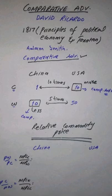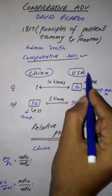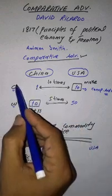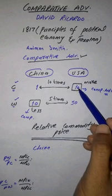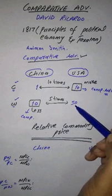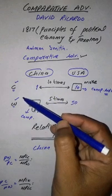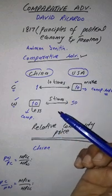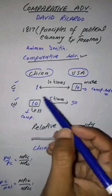To elaborate this with a numerical example, we have two countries: China and the United States of America. Looking at the table, China is less efficient in the production of both computer programs and wheat, while the USA is more efficient in the production of both. So USA has absolute advantage in both commodities and China has absolute disadvantage. According to Adam Smith, trade between them is not possible, whereas David Ricardo says trade between them is not only possible but can also be beneficial.